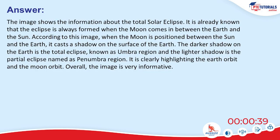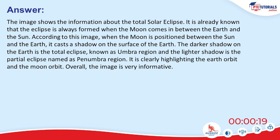The image shows information about the total solar eclipse. The eclipse is formed when the moon comes between the earth and the sun. When the moon is positioned between the sun and the earth, it casts a shadow on the surface of the earth. The darker shadow on the earth is the total eclipse, known as the umbra region, and the lighter shadow is the partial eclipse, named the penumbra region.